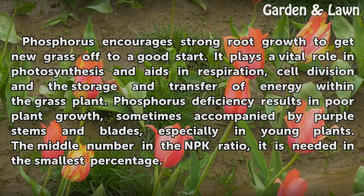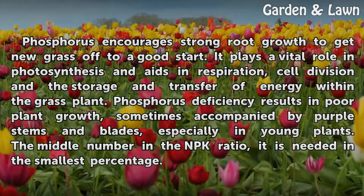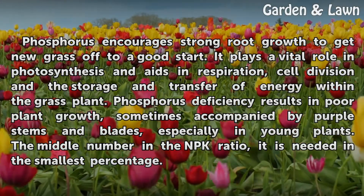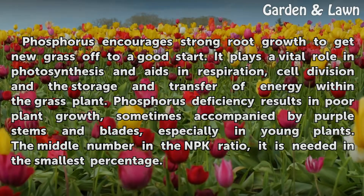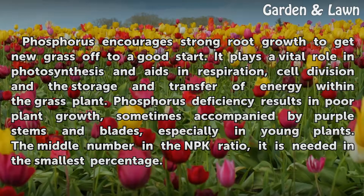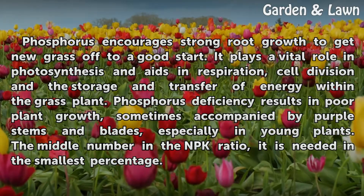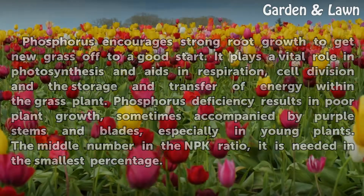Phosphorus encourages strong root growth to get new grass off to a good start. It plays a vital role in photosynthesis and aids in respiration, cell division, and the storage and transfer of energy within the grass plant. Phosphorus deficiency results in poor plant growth, sometimes accompanied by purple stems and blades, especially in young plants. It is the middle number in the NPK ratio and is needed in the smallest percentage.